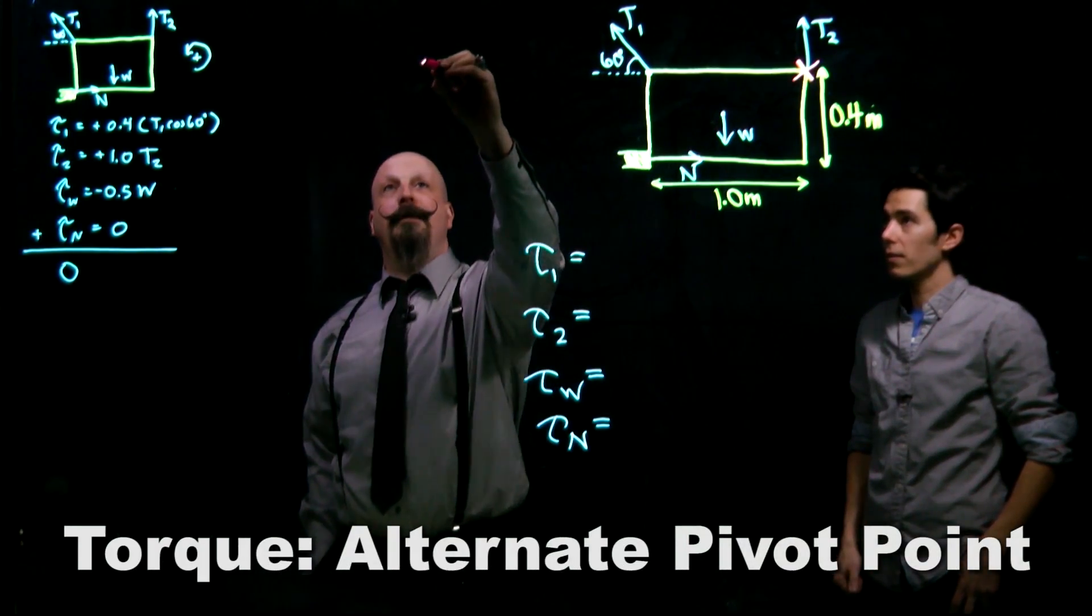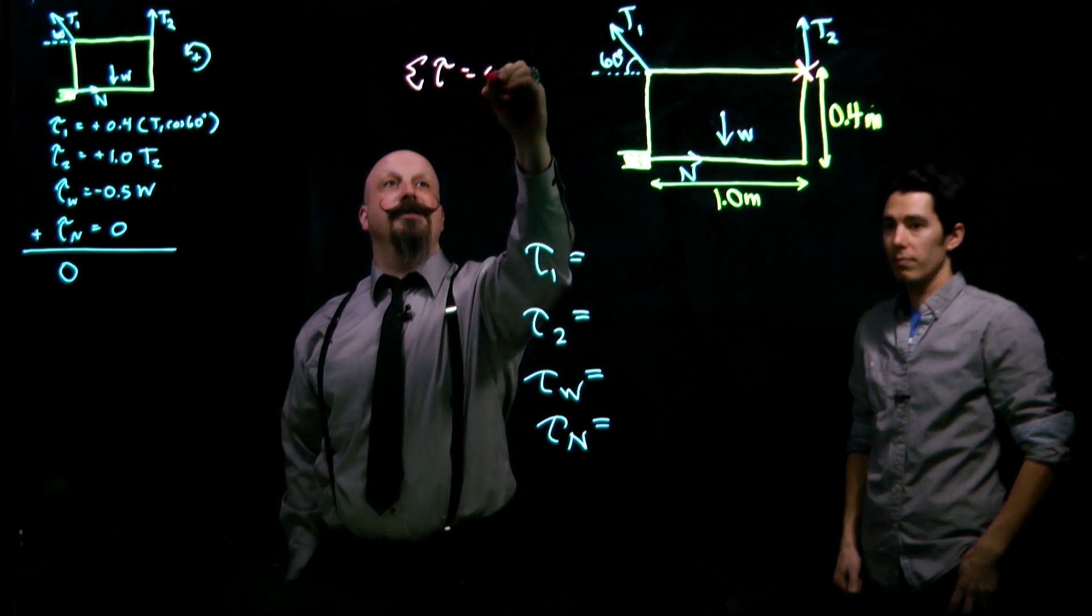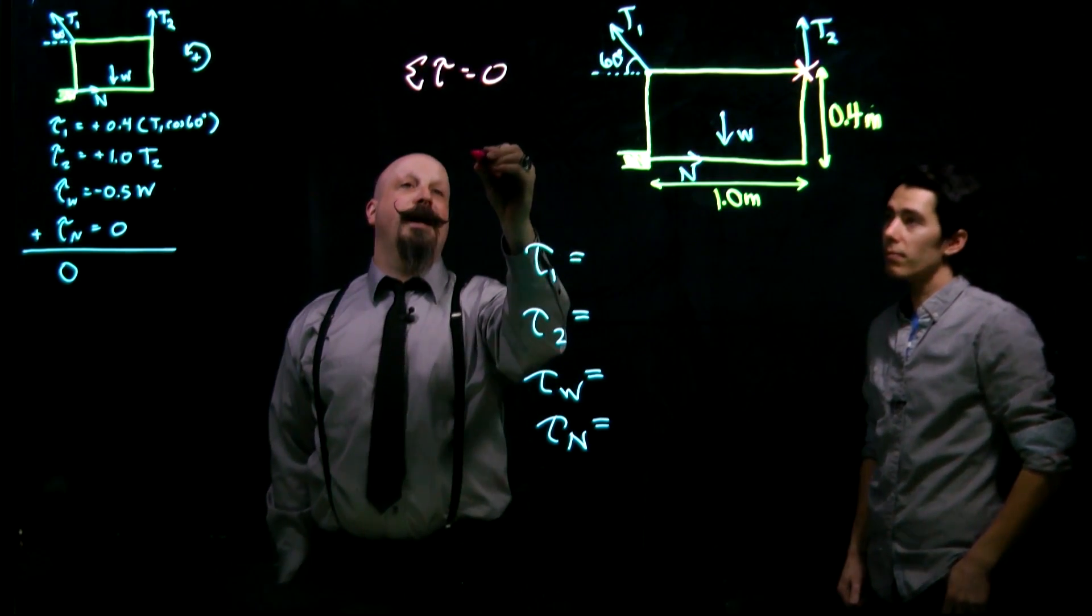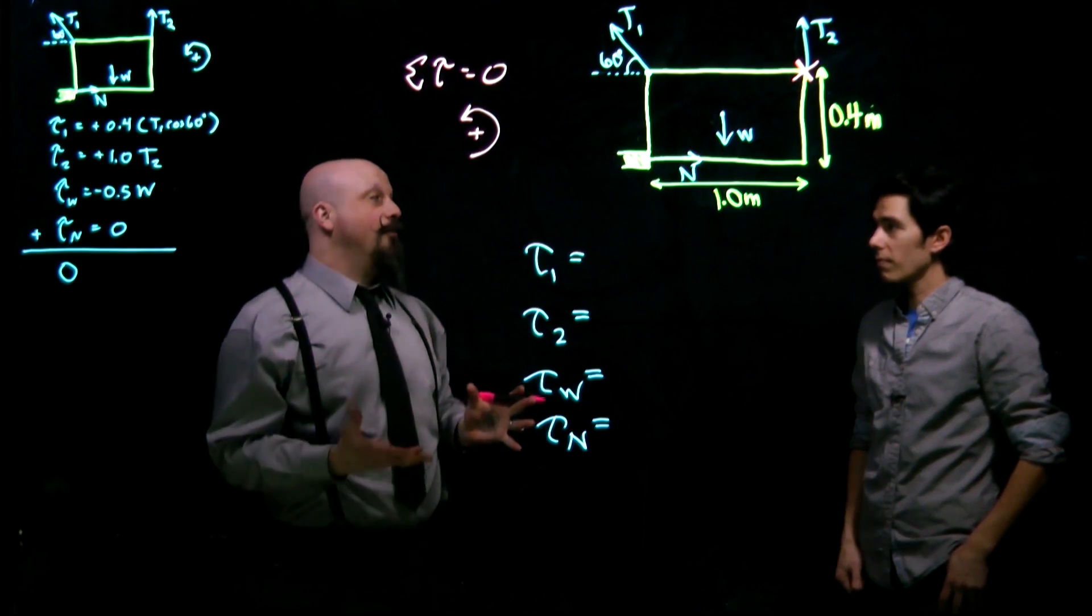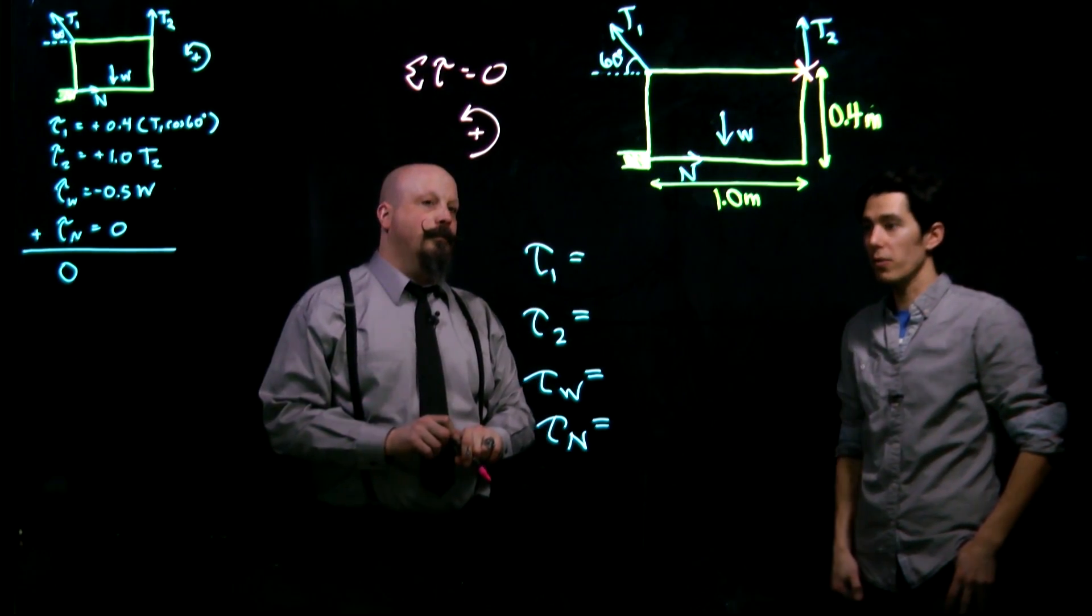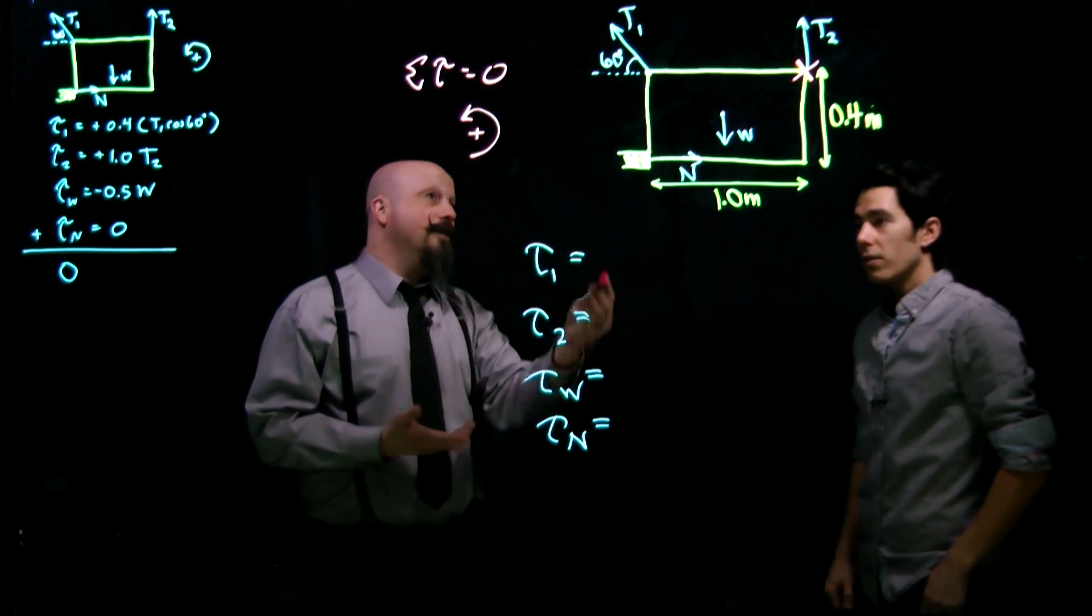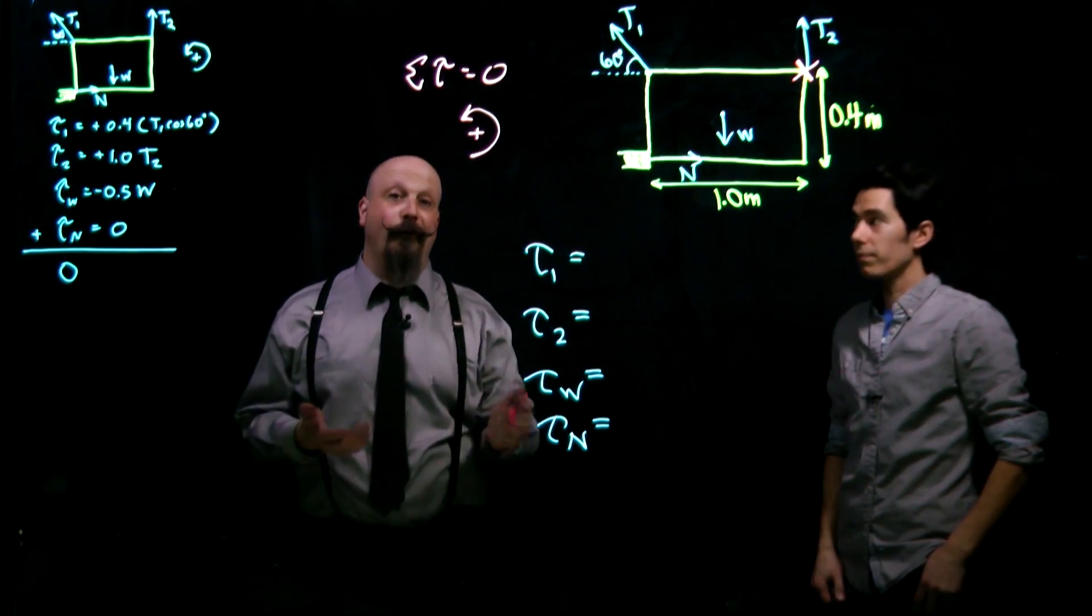In that case, we're still going to be solving for the sum of torques being equal to zero, and we also will still be looking at an orientation axis such that counterclockwise is the positive direction of rotation. Let's go through each of those again. We still have the same four forces taking place in this scenario, so we can still solve for four torques.